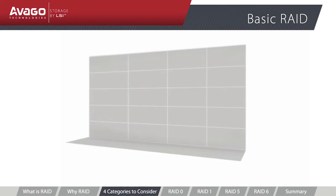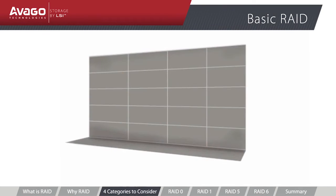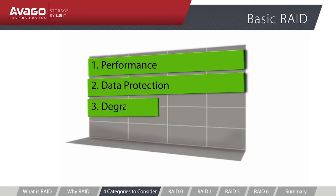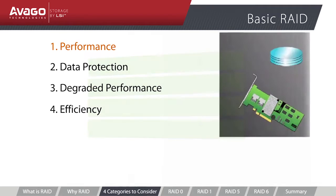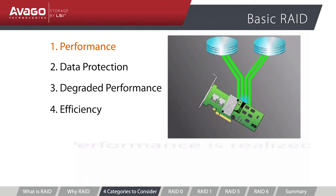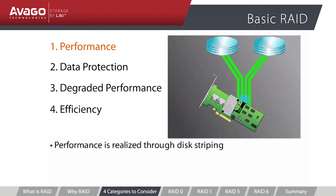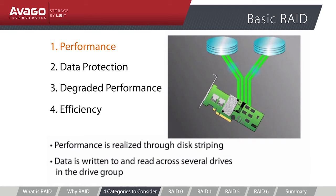At a deeper level, there are four categories to consider when deciding upon RAID levels: Performance, Data Protection, Degraded Performance, and Storage Efficiency. The first category is Performance, which is realized through disk striping. To improve performance, data is written to and read across several drives in the RAID group, and because of this, data can be read or written more quickly than when compared to a single drive.